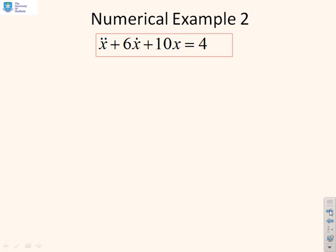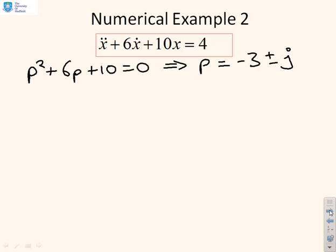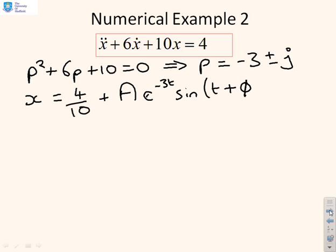The second example, then, and we'll do this one, just writing on the screen, so you can see what's going on. So first of all, I need the characteristic equation. So I can write p² + 6p + 10 = 0 implies that p = -3 ± j. And therefore, I can write my general solution as x = 4/10. Hopefully you can see where the 4/10 comes from, from the steady state condition. Plus A, and the exponential is going to be e^(-3t) because the -3 is the real part of the root. And then I'm going to get sine t + φ. Again, the frequency is 1 because I've just got j as the complex root.